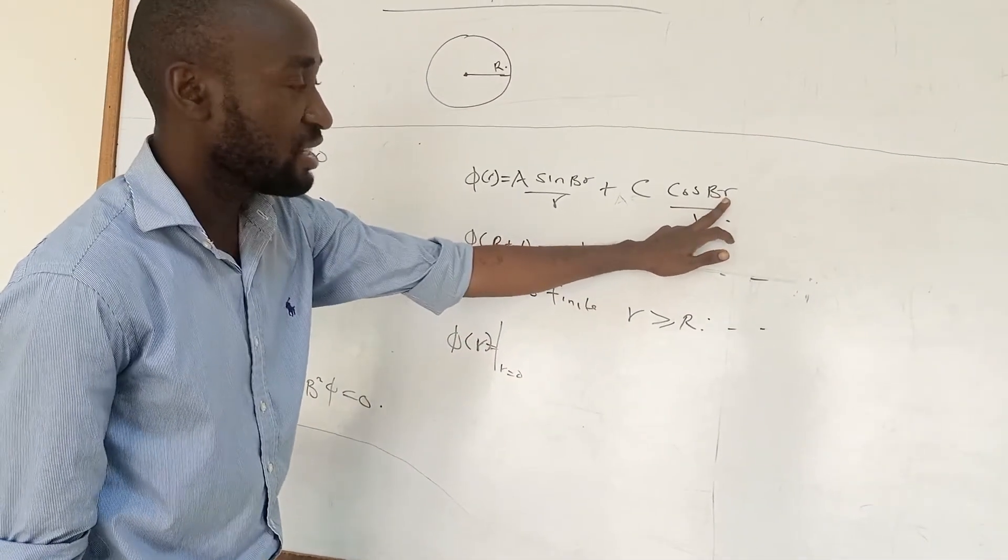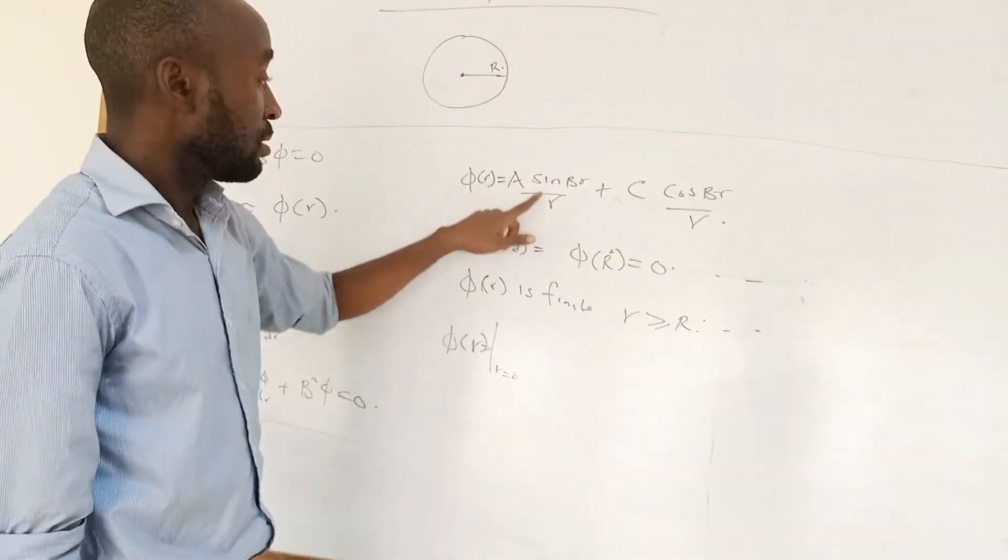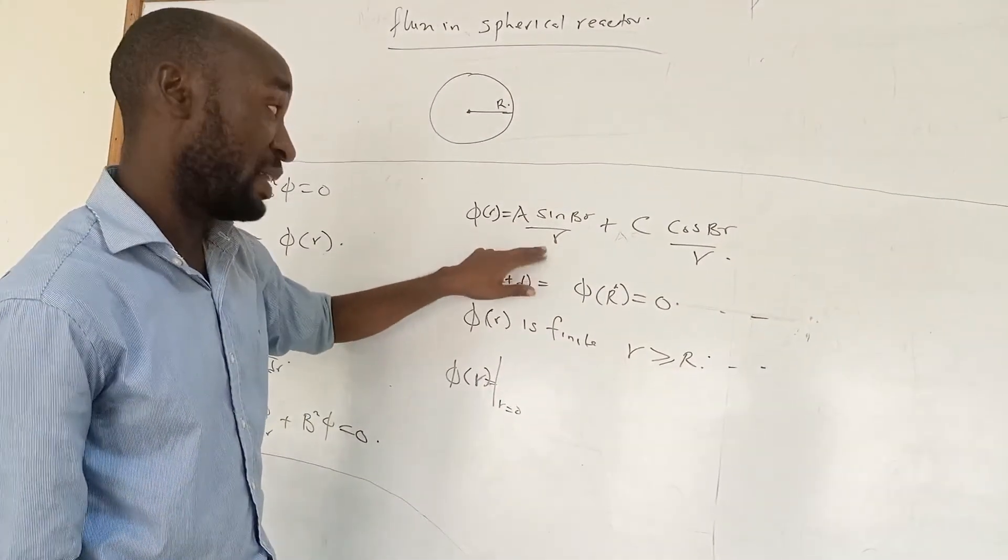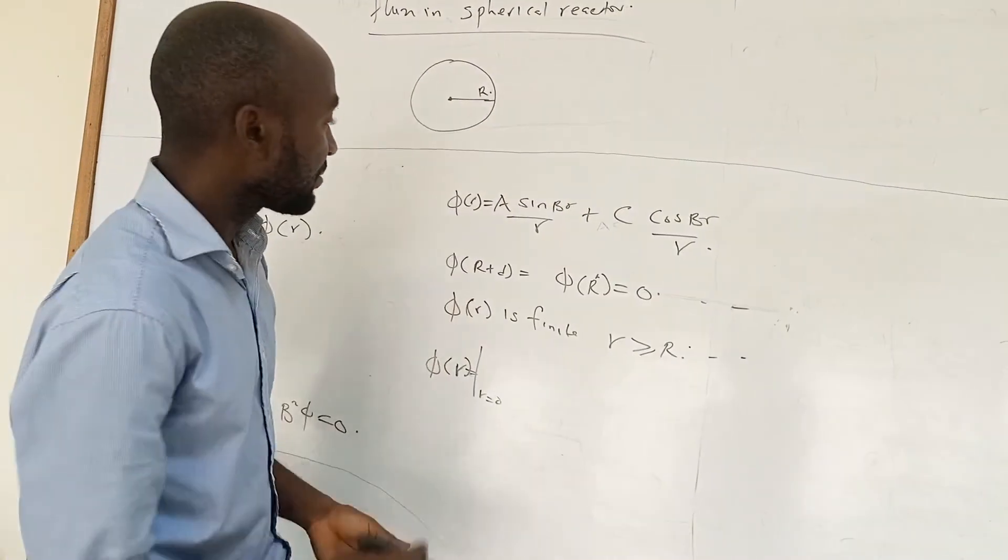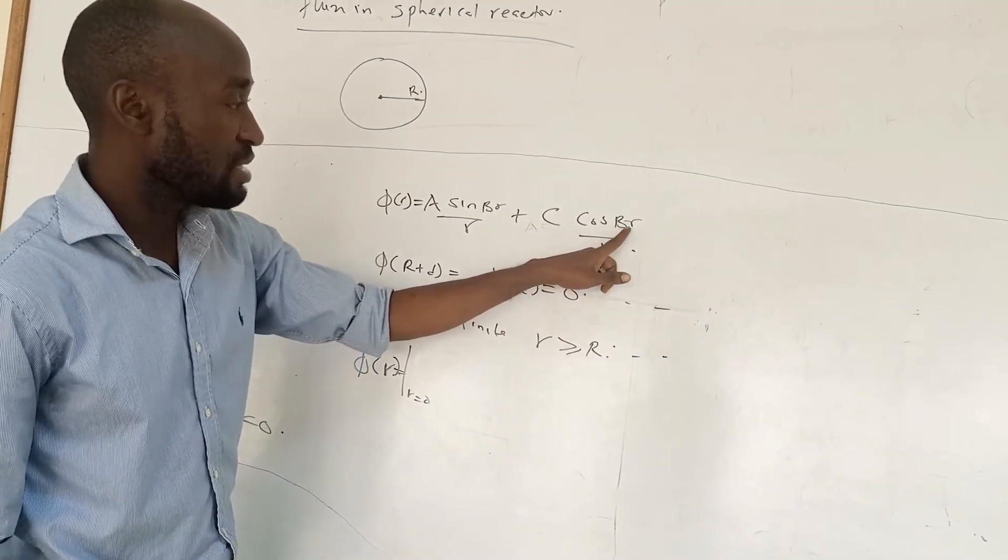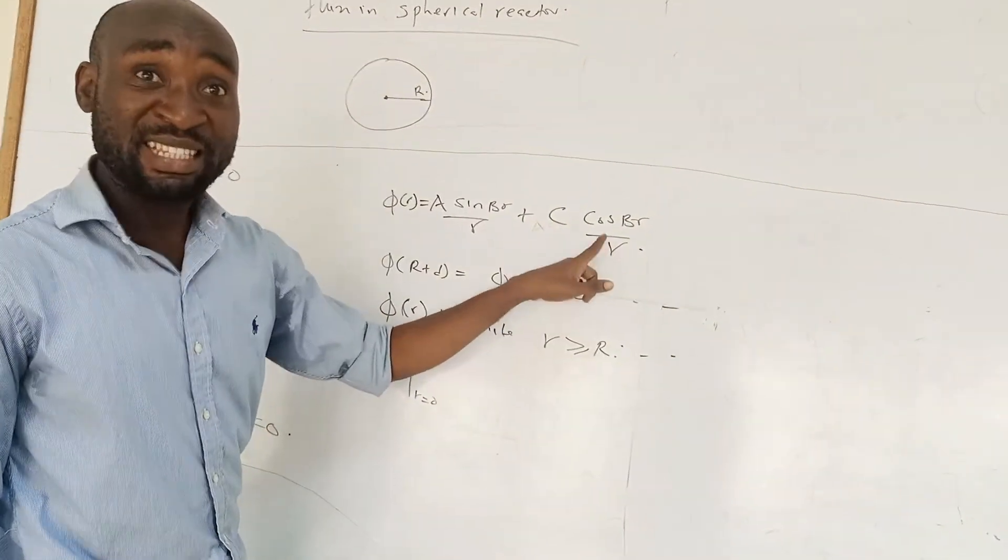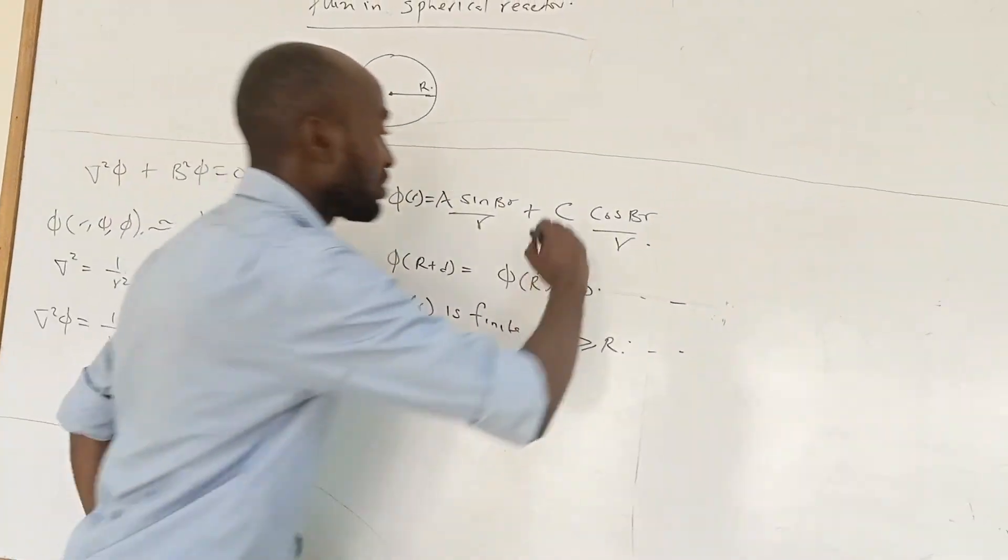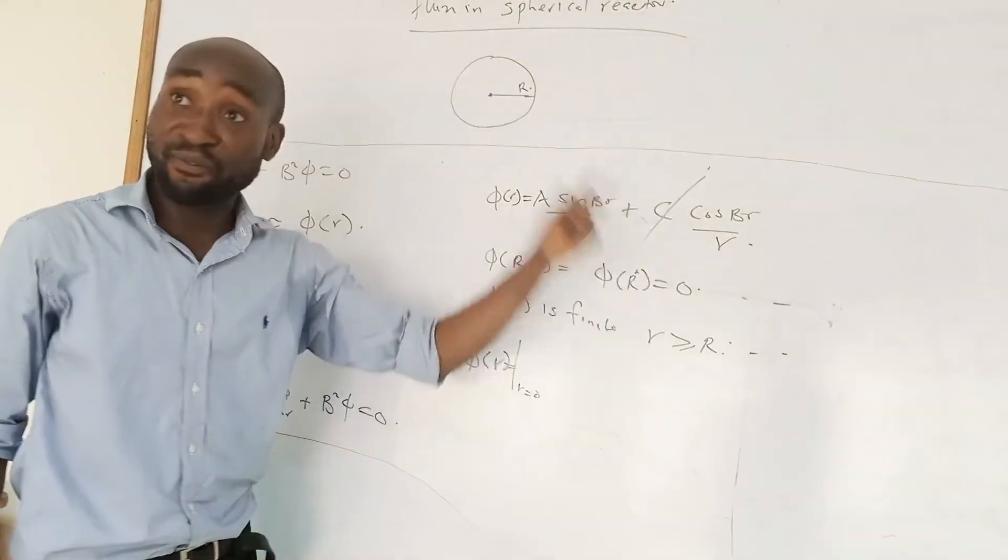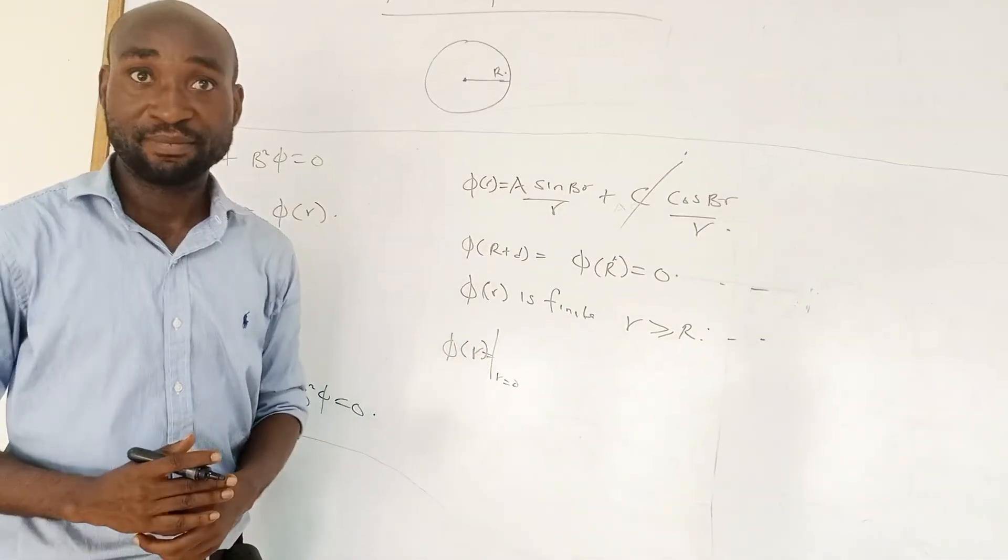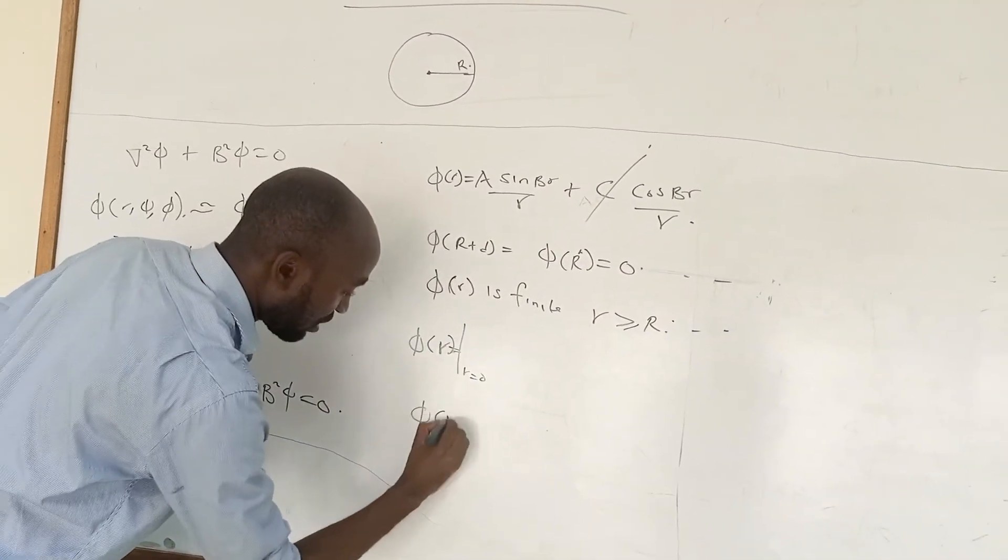When we put r equal zero here, what do we have? We have zero here. If we come here and put this one to be zero, because zero will give us one, this one will give us zero, zero divided by one will give us infinity. So we cut this one out, it can never be finite. So that means C, because the flux inside must be finite.